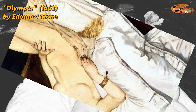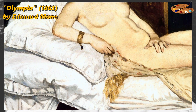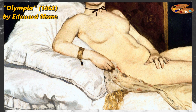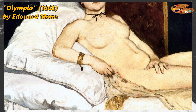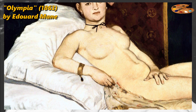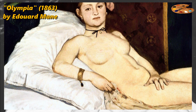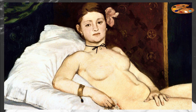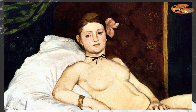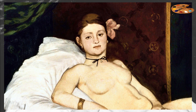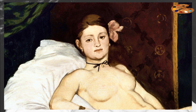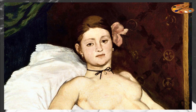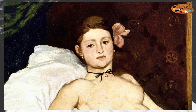Olympia by Edouard Manet is one of the most famous and scandalous paintings in the history of French art. This work, exhibited at the Paris Salon in 1865, caused a real shock among viewers and critics, as it radically violated traditional ideas about female beauty, nudity, and social norms of the time.